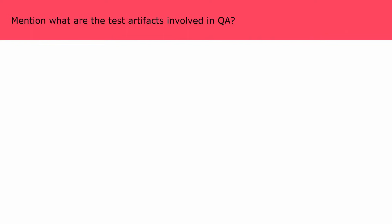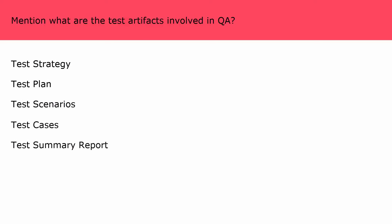What are the test artifacts involved in QA? The test artifacts involved in QA are: test strategy, test plan, test scenarios, test cases, test summary report, bug report, etc. We have created a separate video on test deliverables, also known as test artifacts — check out the link in the description below.